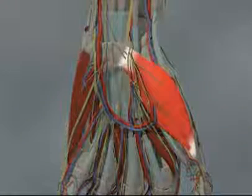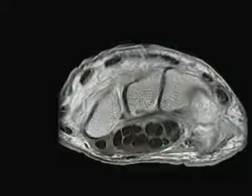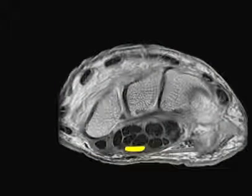In particular, it supplies the thenar musculature. Because of the reduction in space below the tight flexor retinaculum, it is the median nerve — seen in this axial cross-section — that presents to the doctor as being damaged.